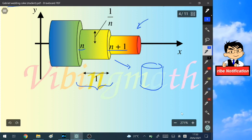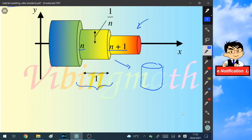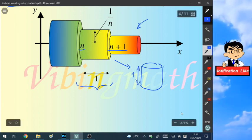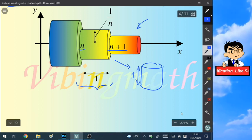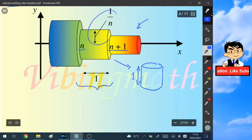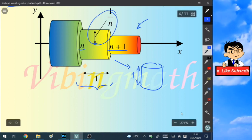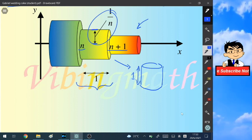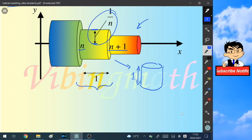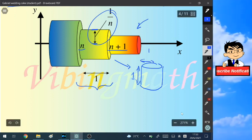We would like to rotate this cylinder by 90 degrees, which is like this. Now the height of this cylinder goes from n to n+1, which is equal to 1. And then its radius is the distance from the x-axis to the upper part of this horizontal cylinder, which is equal to 1 over n.